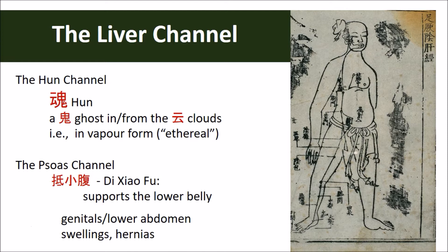This channel has relatively few points and kind of ends at the ribs, as opposed to the other yin channels that have points on the chest. Some points are very concentrated in small areas, like the cluster at the groin — liver 10, 11, and 12. If one were to give a theme or title to this channel, the liver channel might be considered the hun channel, and also the genital or psoas channel. The hun is that which has been sent by the ancestors — a yang kind of spirit, a vaporous kind, not an earthly kind, meant to experience the world.